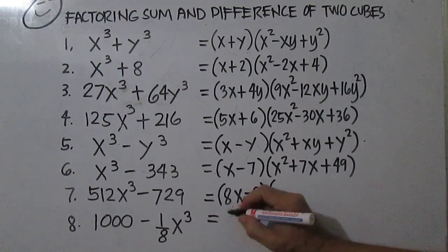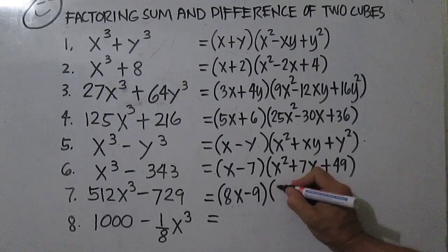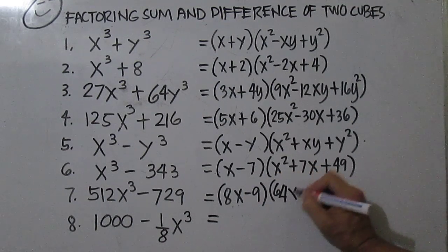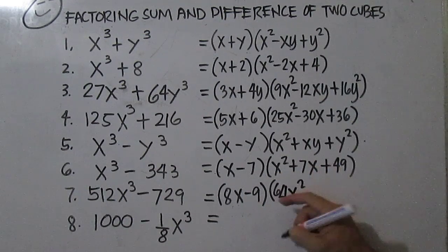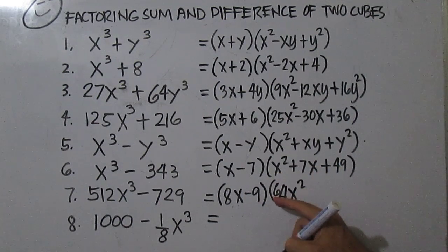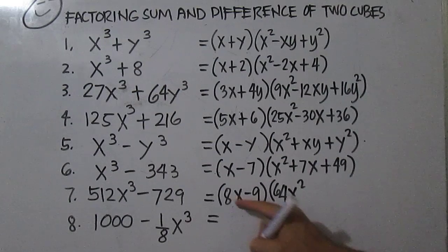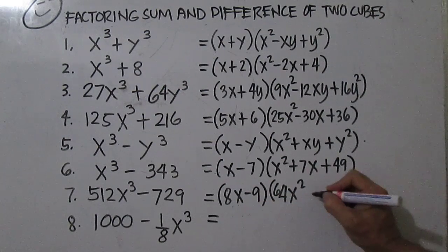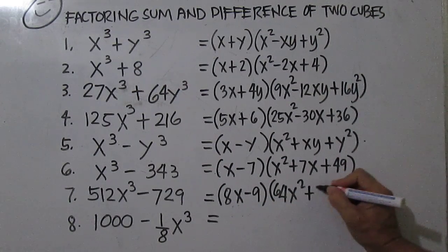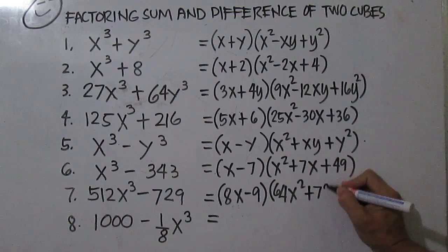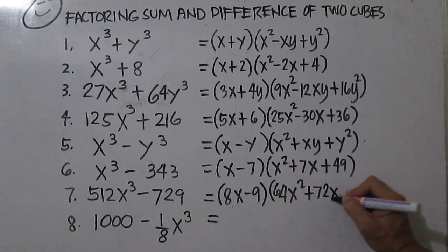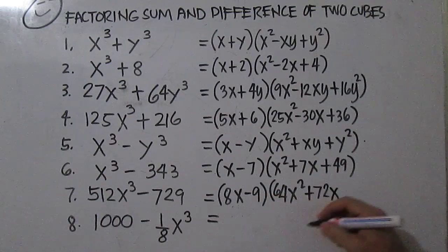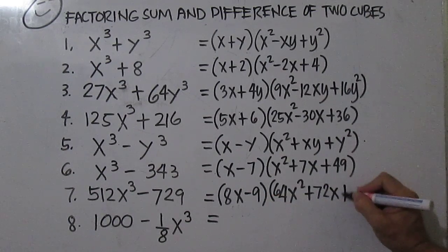From this factor, you square the first term, then write the opposite of the product of the first and second term, which gives plus 72x, then square the second term.